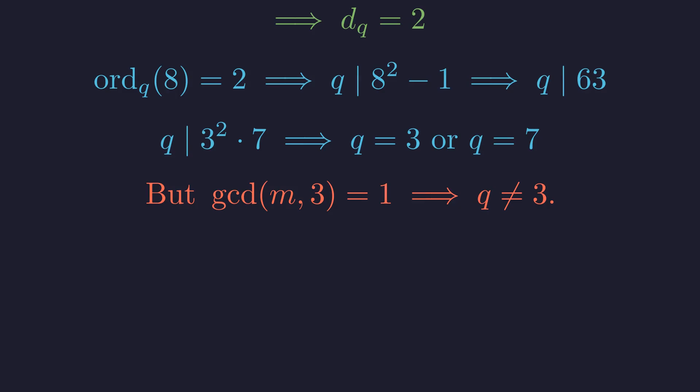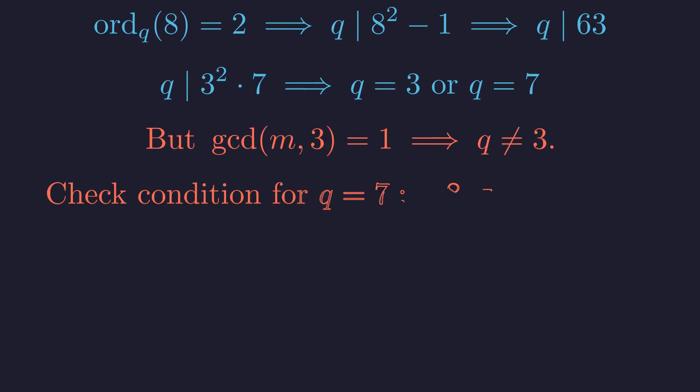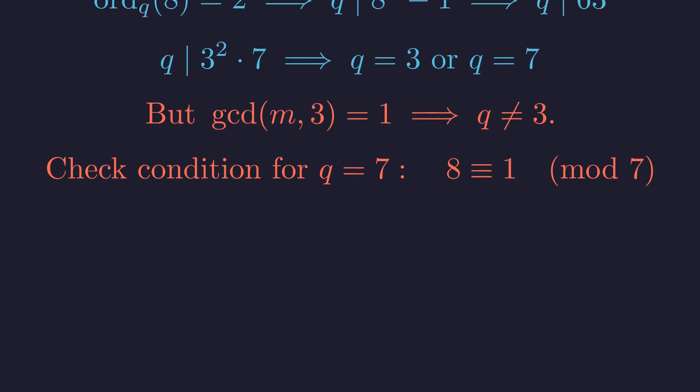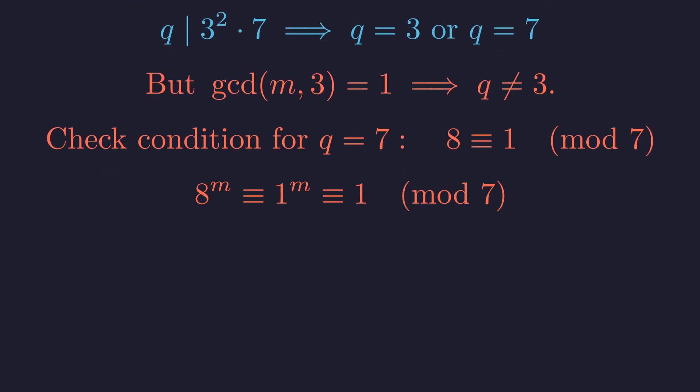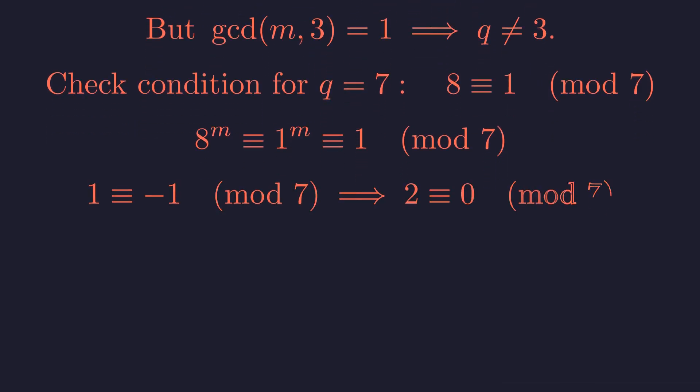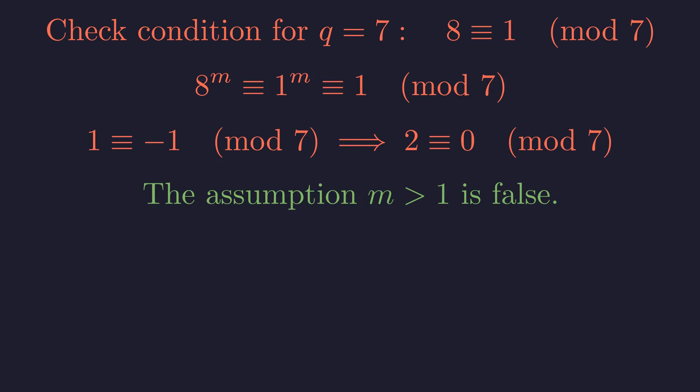However, we defined m to be not divisible by 3, so its smallest prime factor q cannot be 3. If we test q equals 7, we see that 8 is congruent to 1 modulo 7. This means 8 to the power m would be congruent to 1 modulo 7. This contradicts our requirement that 8 to the m is negative 1 mod q because it would mean 1 is congruent to negative 1, which is false. Our entire house of cards built on the assumption that m is greater than 1 has collapsed. That assumption must be false.